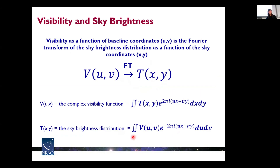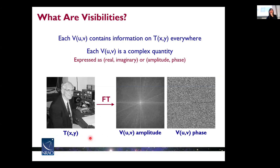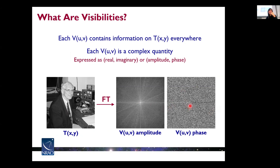Here I am showing the functional form of Fourier transform. As an example, here is a typical image as a function of x and y. If we do a Fourier transform, we will get the visibility, which is composed of amplitude and phase. To interpret these visibilities: each UV point contains information of the entire image. You can think of the visibility amplitude as showing how much the image has a certain spatial frequency, and the phase of the visibility tells us where this frequency is located in the image.